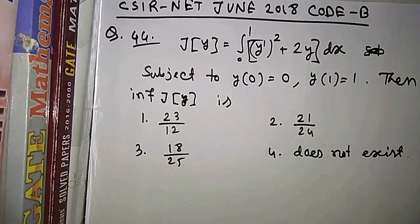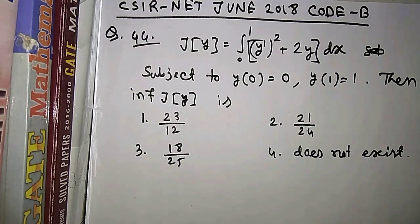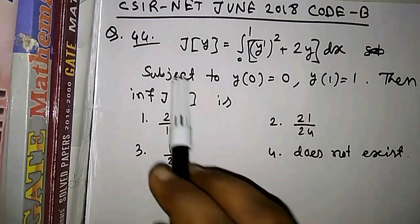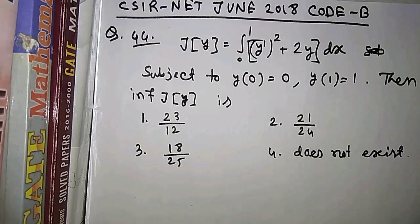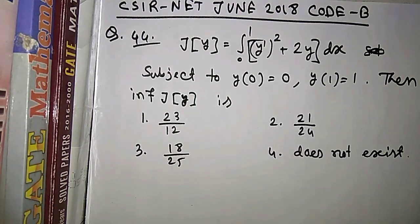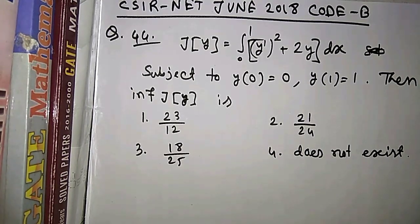Hello friend, today I will solve question number 44 of booklet code B of CSL NET June 2018. The question is on calculus of variation: given that J[y] equals the integral from 0 to 1 of (y' squared plus 2y) dx, with boundary conditions y(0) = 0 and y(1) = 1, find the infimum of J[y].